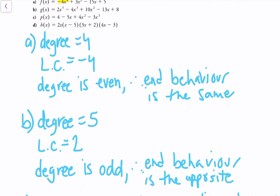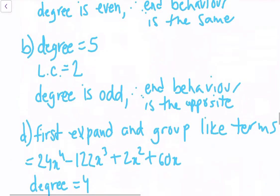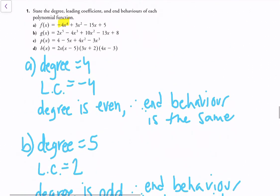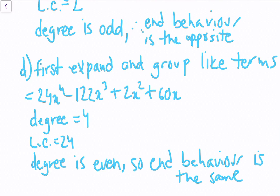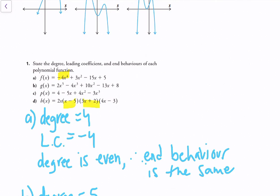For part b, the degree is 5 and the leading coefficient is 2. The degree is odd, so the end behavior is opposite. For part d, the function is written in factored form, which directly tells us the zeros: 0, 5, −2/3, and 3/4. To find the degree and leading coefficient, we need to expand and collect like terms. After doing so, we get degree 4, leading coefficient 24, and since the degree is even, the end behavior is the same in both directions.